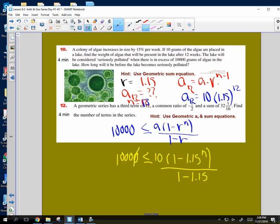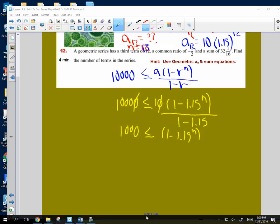10,000 less than or equal to, we started with 10. We go 1.15 to the N all over 1 minus 1.15. Divide by 10. So now I have 1,000 less than or equal to 1 minus 1.15 to the N. And then this is going to be over. What's 1 minus 1.15? Negative 0.15.